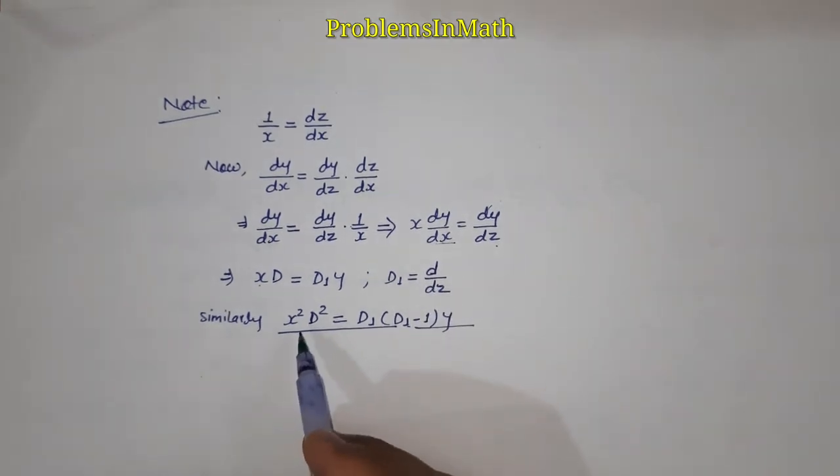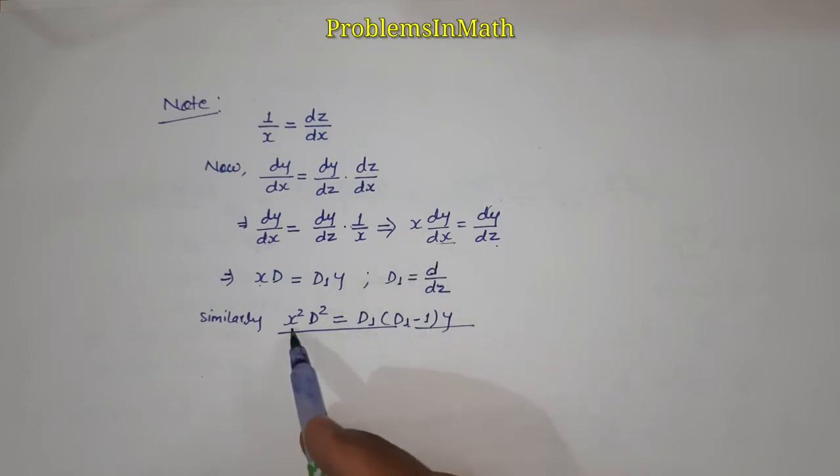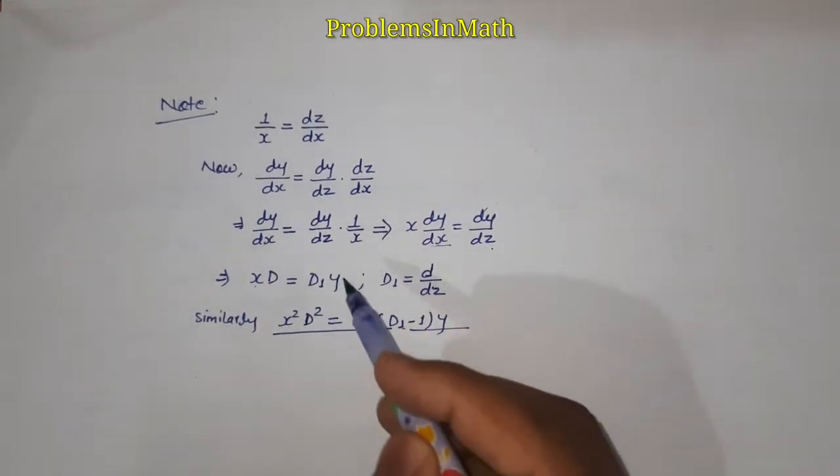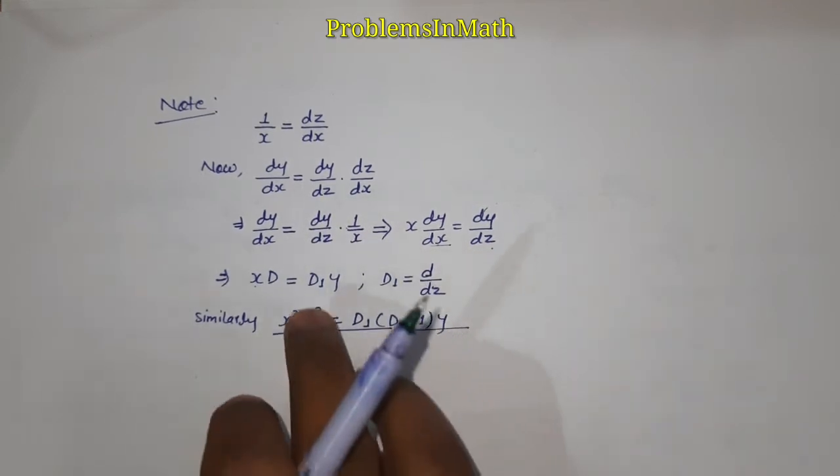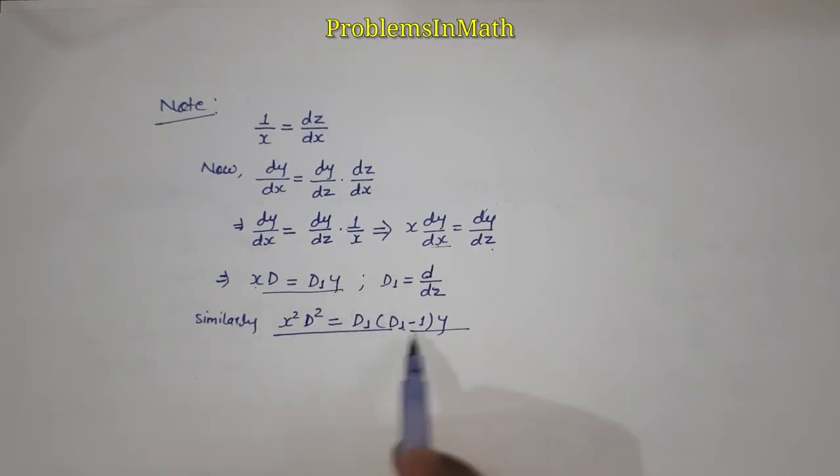Similarly we can get for the second derivative, x square d2y over dx square. This will be D1 into D1 minus 1 times y. It's very easy, not very tough. I have written here the full steps for the first one. Now we are going to use these two.